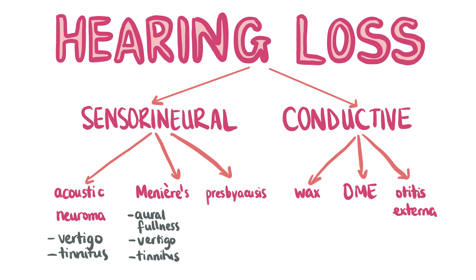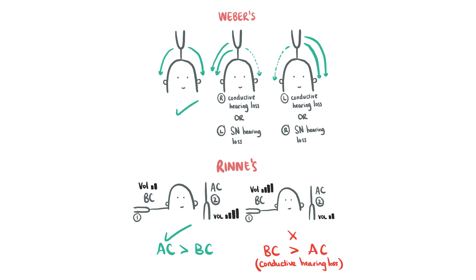Hearing loss can be classified as either sensorineural or conductive. Sensorineural indicates a problem with the nerve, caused by pathologies involving the inner ear or cranial nerve 8 — for example, acoustic neuroma or Meniere's disease. Conductive indicates a problem with the sound getting to the nerve, caused by pathologies involving the middle or external ear — for example, earwax, otitis media or otitis externa. You can differentiate between the two using Rinne's and Weber's tuning fork tests. In conductive hearing loss, Weber's will lateralise to the affected ear and Rinne's will show bone conduction is better than air conduction. In sensorineural hearing loss, Weber's will lateralise to the unaffected ear and Rinne's will show air conduction is better than bone conduction, although the air conduction is not as loud as in the unaffected ear.